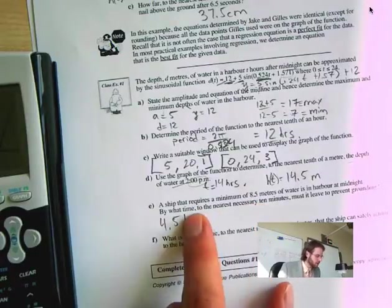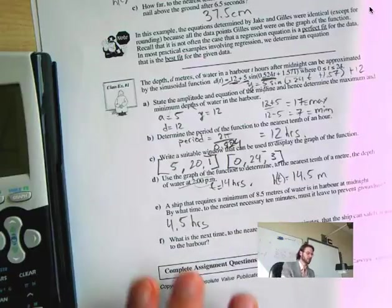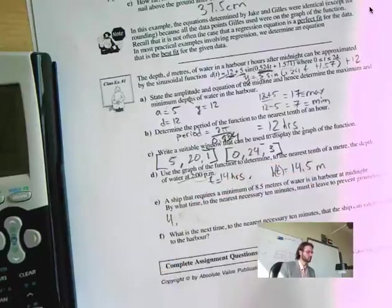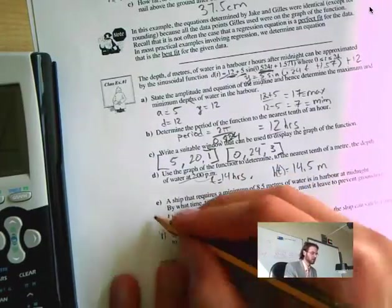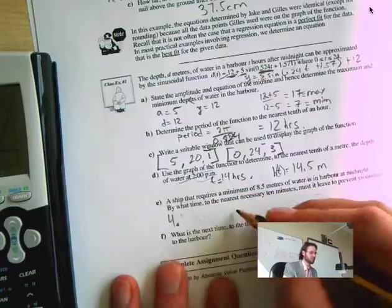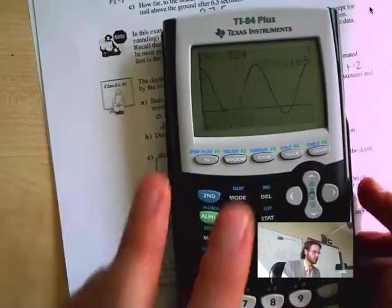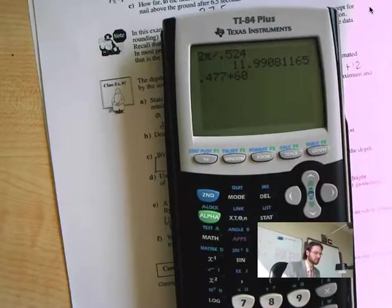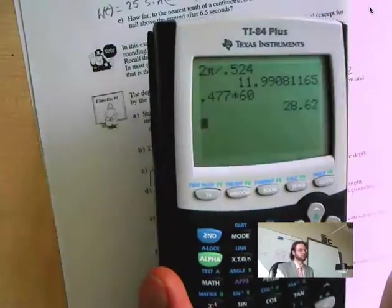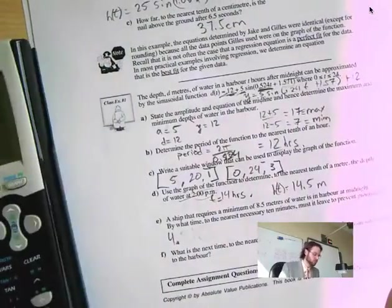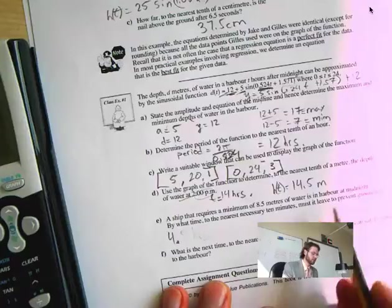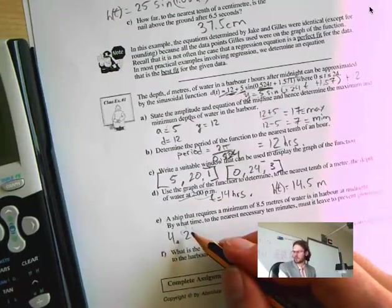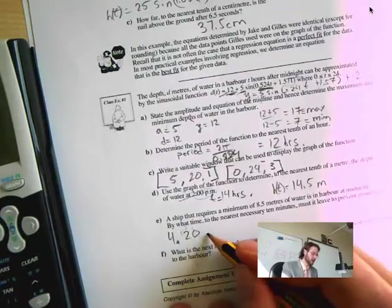So he has to leave at 4.5 hours. So before that, so 4.45. So I'm going to go 4 and 5, 4 hours. So that's at 4. Now we have to find minutes. So we go 0.47 times 60. So 0.477 times 60. So that is 28.6, so 30 minutes. Leave to prevent grounding. 20 minutes. So I'm going to say in 20 minutes because it has to leave before then. So at 4:20 a.m.